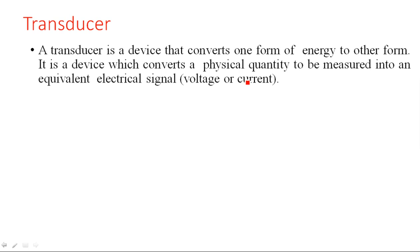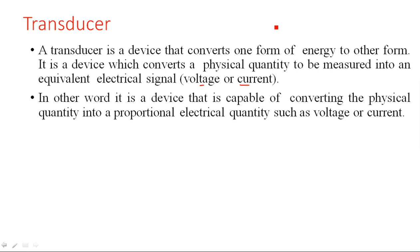A transducer is a device which converts a physical quantity to be measured into an equivalent electrical quantity — voltage or current. For example, any pressure or volume will be converted into a voltage or current. So we are going to calculate any type of physical quantity like force, pressure, or volume, and that will be converted into an electrical parameter like voltage or current — proportionally.